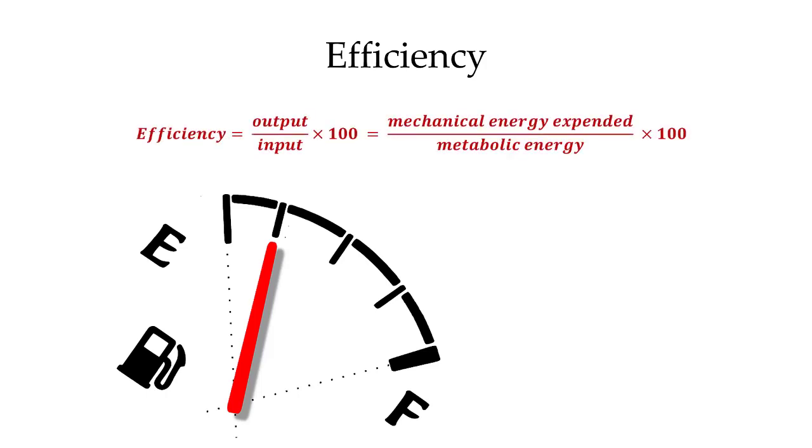The formal equation for efficiency is going to be the output divided by the input multiplied by 100. For our purposes we can talk about the mechanical energy that's being expended, divided by the metabolic energy, and we can multiply that by 100 in order to get our idea of efficiency.